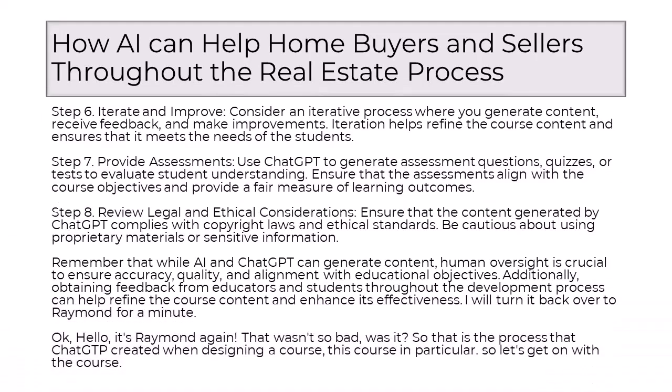Step 6: Iterate and improve. Consider an iterative process where you generate content, receive feedback, and make improvements. Iteration helps refine the course content and ensures that it meets the needs of the students. Step 7: Provide assessments. Use ChatGPT to generate assessment questions, quizzes, or tests to evaluate student understanding. Ensure that the assessments align with the course objectives and provide a fair measure of learning outcomes.